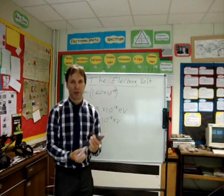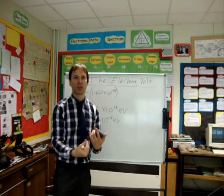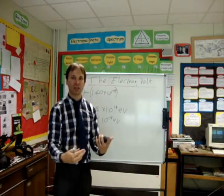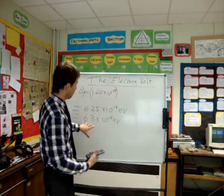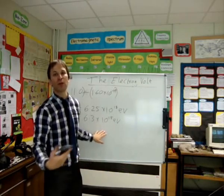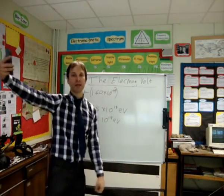And hopefully that makes sense, because if you think of the amount of electrons in a 1 newton weight force, like something like a pencil case, there's going to be loads of them. So you're going to have loads of electron volts. So if you've got a number in joules and you convert to electron volts, you're expecting a really big number.